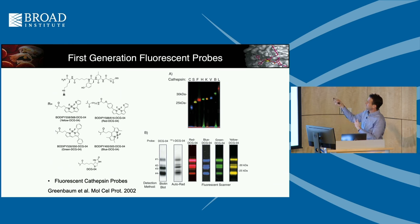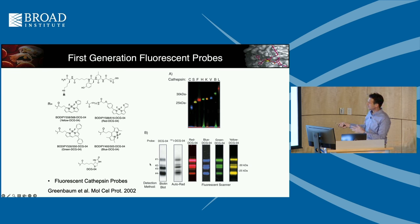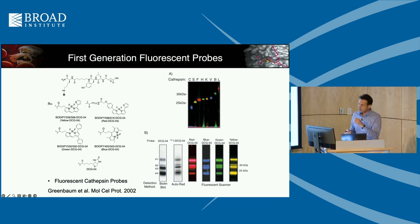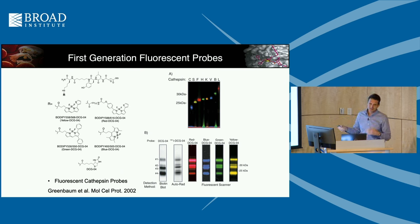At the time there were no scanners for fluorescence, so we used a DNA sequencing rig — literally running our proteins on a DNA gel and scanning for fluorescence at the bottom. We generated an image and were excited because we could use different colors and resolve all these different cathepsins based on their molecular weight. Then scanners started coming out — a flatbed scanner where you could just scan the gel still in the glass plates and see all these labeled bands.